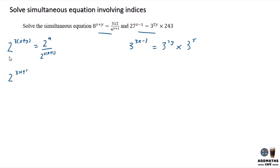So 2 to the 3x plus 3y equals 2 to the 9 minus 2x minus 2. In this case, the both base are same, so you can compare the power. And at the end of the result, you have 5x plus 3y equal to 7.